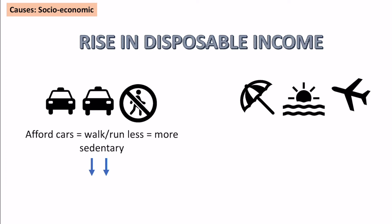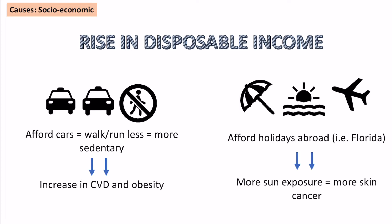With more money, people can also afford to go on holiday to warmer countries like Florida or Spain. If you're going somewhere very sunny, you have more exposure to the sun and therefore a higher chance of skin cancer. This is why we see the highest skin cancer rates in Cornwall, where it's often warmest and people go on holiday, creating a regional disparity in the UK.